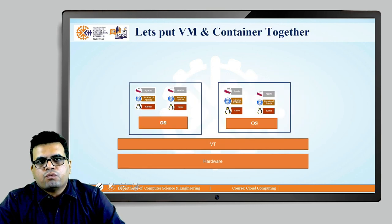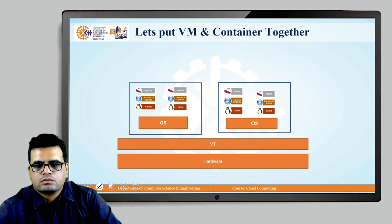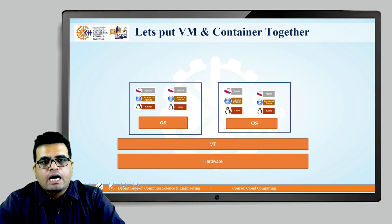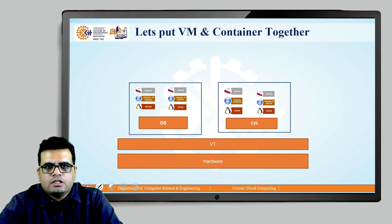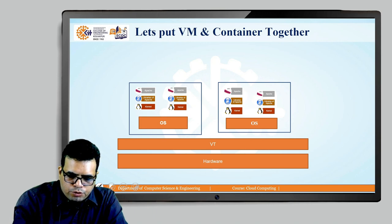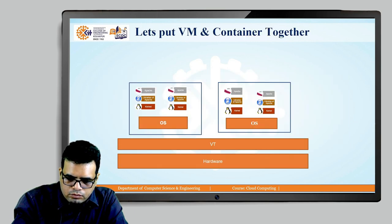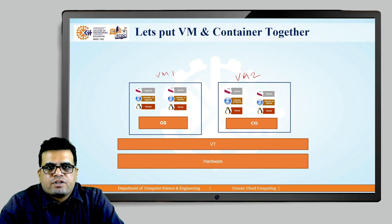What if you put virtual machines and containers together? This diagram shows we have hardware, and on top of the hardware we have a virtual machine monitor — a bare metal virtualization technology — using which we have created two virtual machines: VM1 and VM2. Inside each virtual machine, we have different containers running, providing an isolated environment.